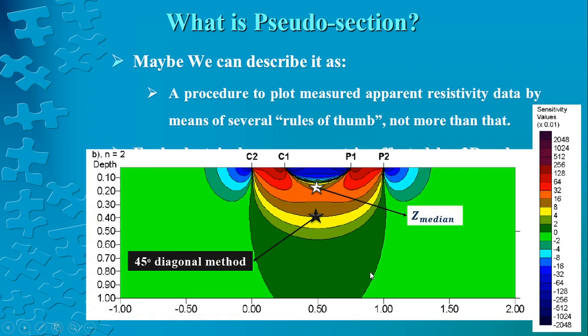This is the 45 degree diagonals method for Pseudo-section plotting, and this location is the median or effective depth of investigation which is used in Res2Dinv software and most software that plot Pseudo-sections. Even in this point you will see that much of the area with very high positive or very high negative sensitivities is not taken into consideration if we just say that this measurement would be representative of these points.